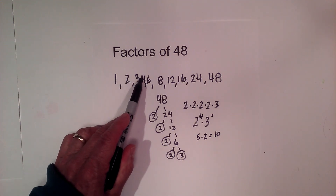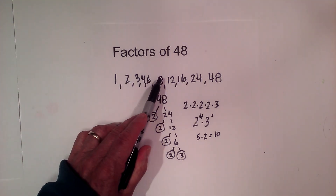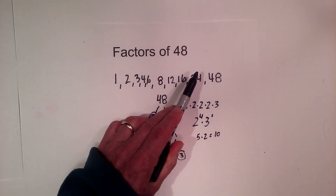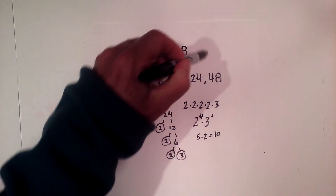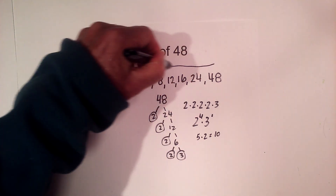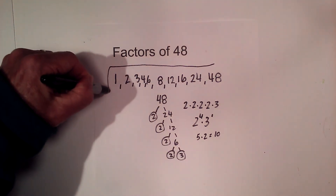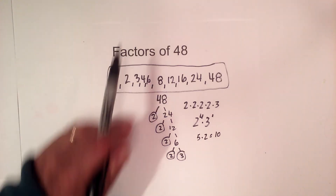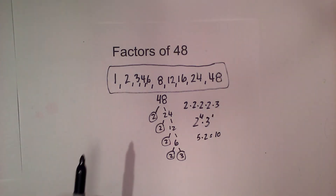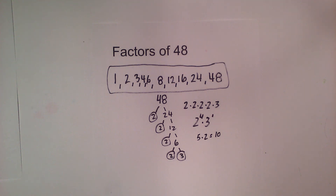So we should have 10 factors — let's check: 1, 2, 3, 4, 5, 6, 7, 8, 9, 10. Here are the factors of 48. If you'd like to know more about factoring, this playlist will help. As always, thanks for watching — Moving Math uploads a new math and science video every day, so please subscribe and share.